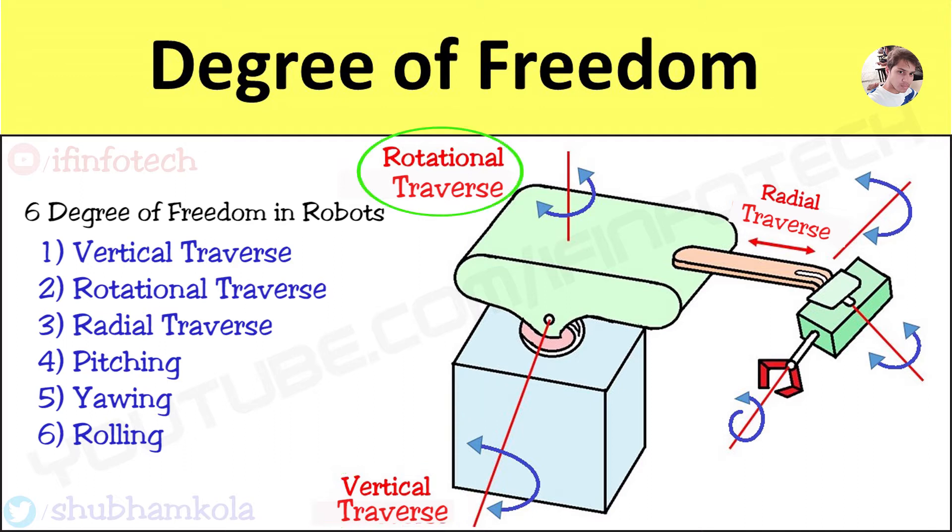Second is rotational traverse motion. It provides rotation to body about vertical axis through the linkages between body and base. Third is radial traverse motion. It provides extension or retraction movement to arm. These 3 motions are arm and body motions.